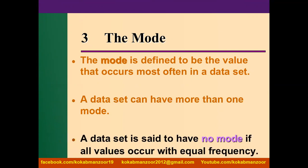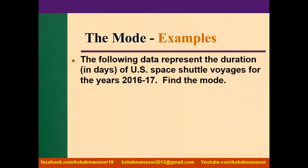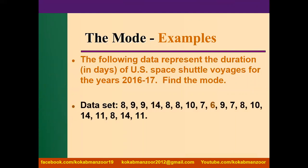One more thing: sometimes we don't have mode at all. All the values are occurring for one time, so means there's no mode — nothing is occurring more frequently than the others. So sometimes it happens; there's no mode. So how to calculate the mode? It's very simple.